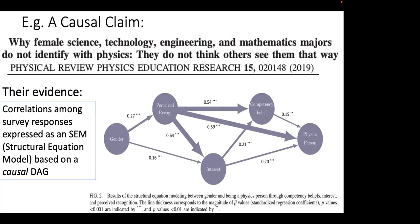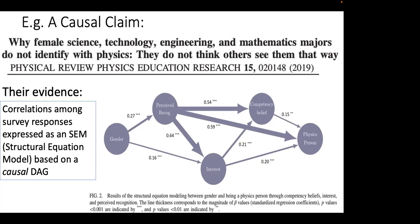What sort of evidence was used to support this? The basic method was to give surveys on various attitudes: perceived recognition — whether people feel recognized for what they're doing in physics — whether they're interested in physics, whether they feel good at doing physics, and finally, whether they identify as a physics person. The survey responses between these variables can really be described by a simple correlation matrix, where each variable is rescaled to have mean zero and variance one. The data are simply a correlation coefficient matrix.